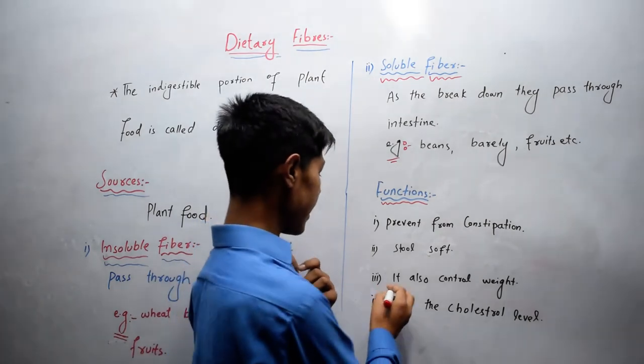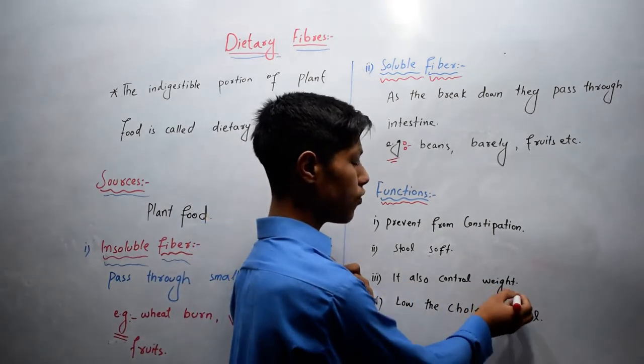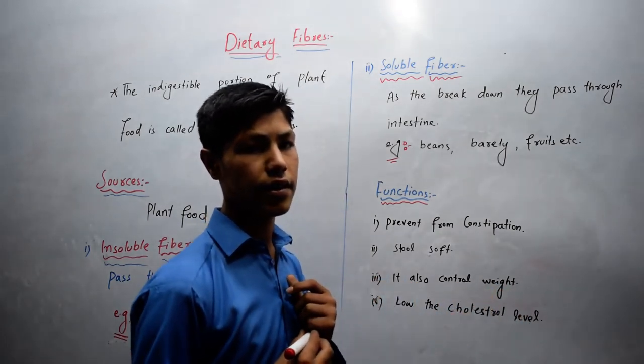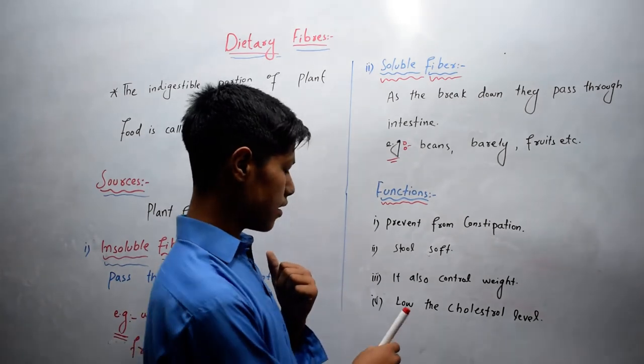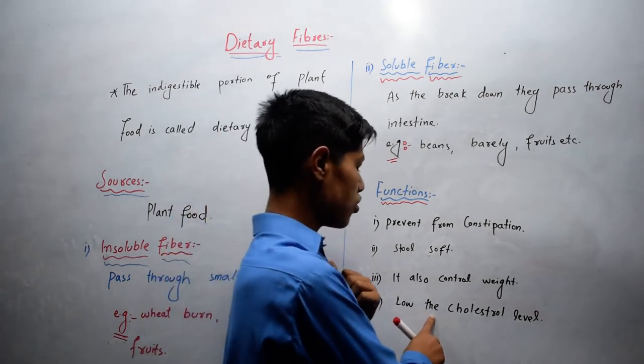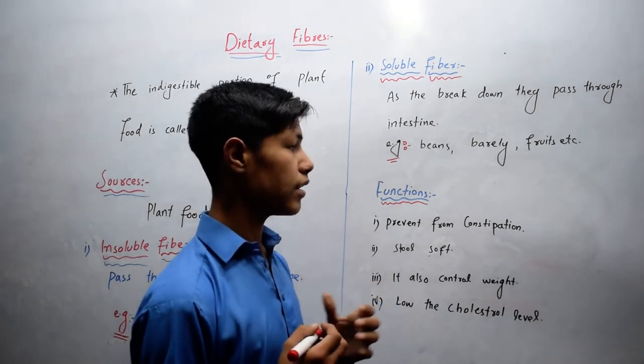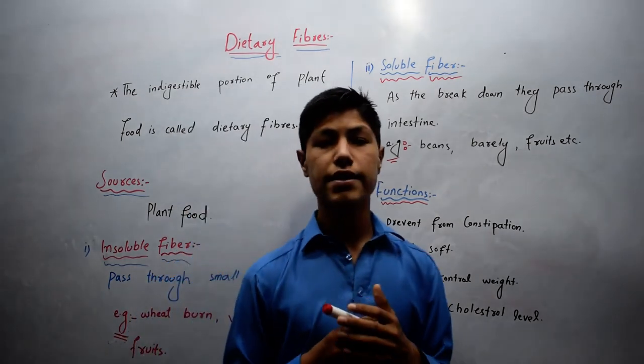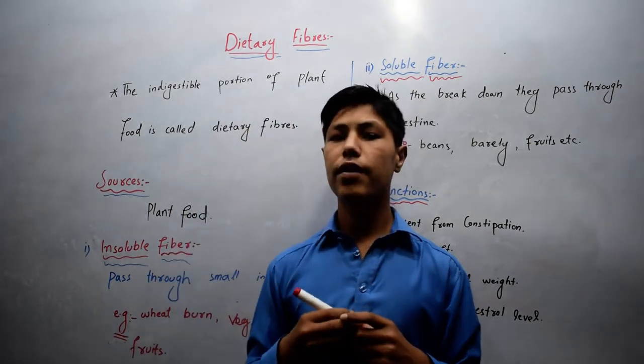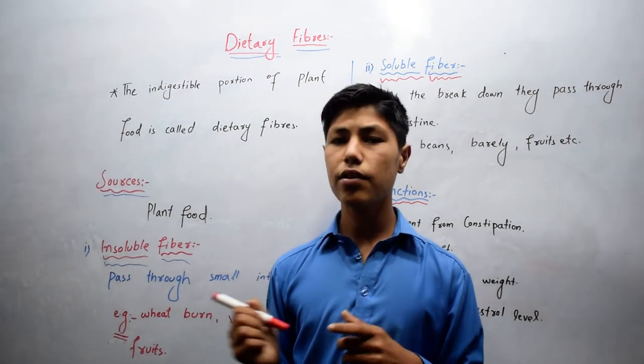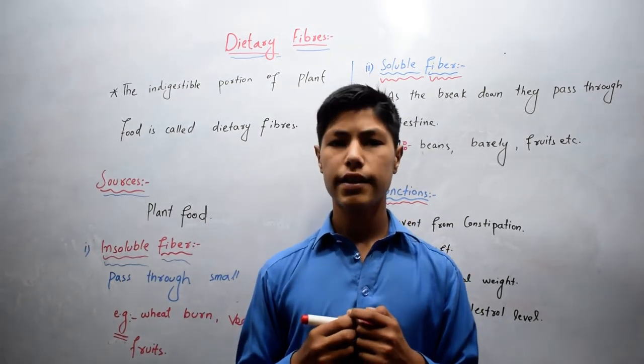The third one is it also controls weight. And the last one is it lowers the cholesterol level and also lowers the sugar level. So this was all about dietary fiber and its types which are soluble fiber and insoluble fiber. Thanks for watching.